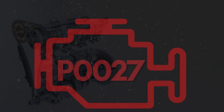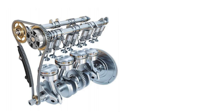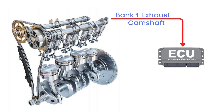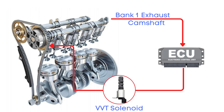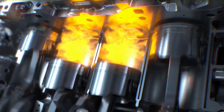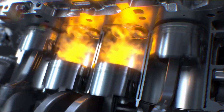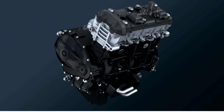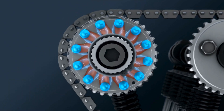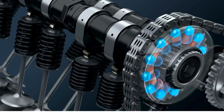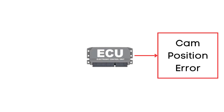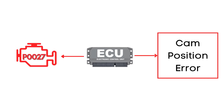Now let's learn why P0027 was triggered. Your engine's camshaft position sensor is constantly measuring the position of the camshaft and sending that data straight to the ECU, which uses it to control the variable valve timing, or VVT solenoid. Depending on the engine load and speed, the ECU sends pulse commands to the VVT solenoid to either advance or delay the camshaft's position. The VVT solenoid then makes the necessary adjustments to the cam phaser, ensuring your engine is performing efficiently and smoothly. If the ECU detects that the camshaft's advance or delay is taking too long, or if it simply can't reach the desired camshaft position, that's when the P0027 code gets triggered.